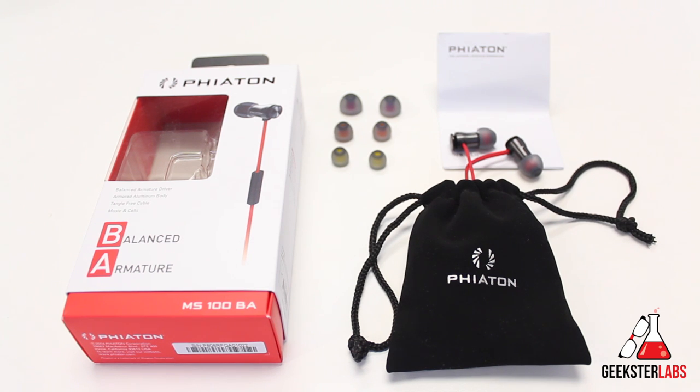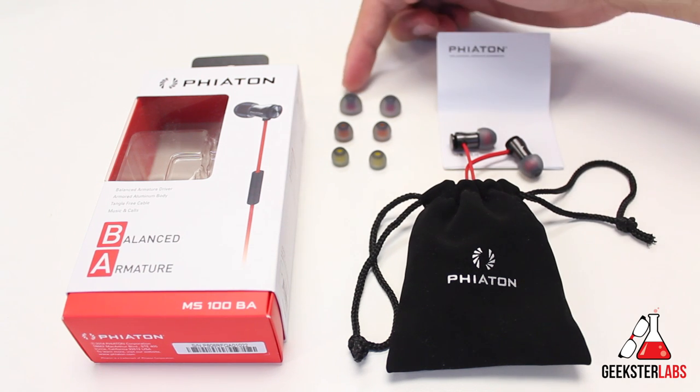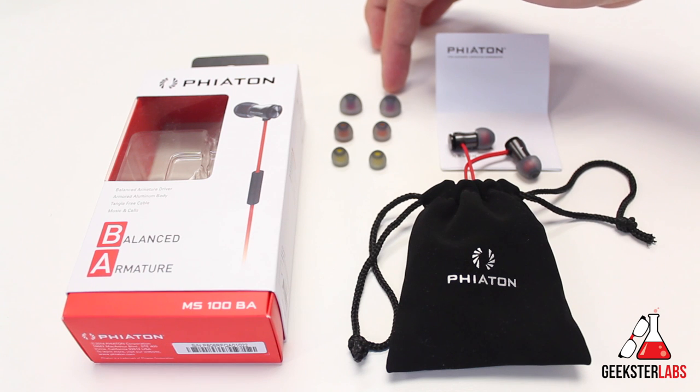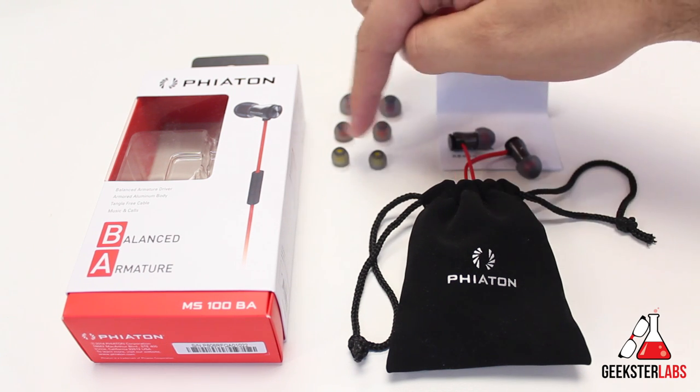We'll get into that in just a bit, but first off this is what is included with the BA 100 BAs. So as you can see we do have some extra large tips right here. There's some that come on the headphones themselves. They do include an extra pair right here. We have one set of medium, one set of small.